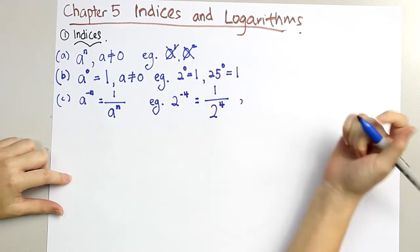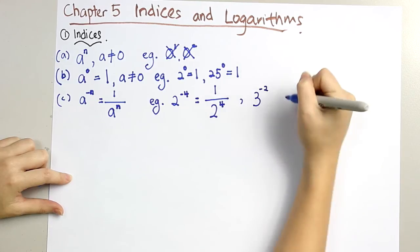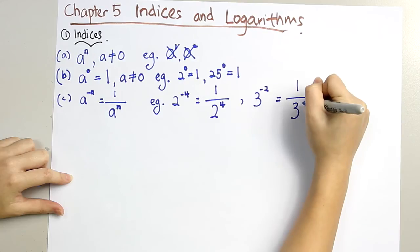Or another example. When 3 to the power of negative 2, we can write it as 1 over 3 to the power of 2.